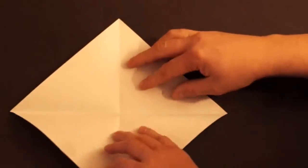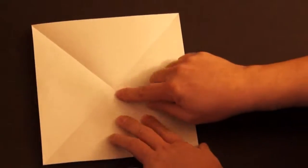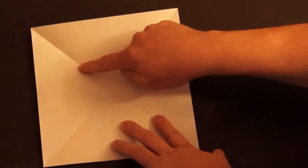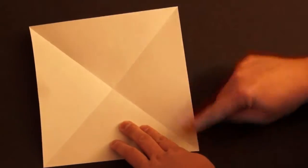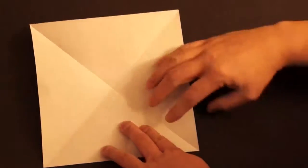Open it back up. Where the creases meet and intersect is the center of the square. Fold the corners, all four corners, to the center.